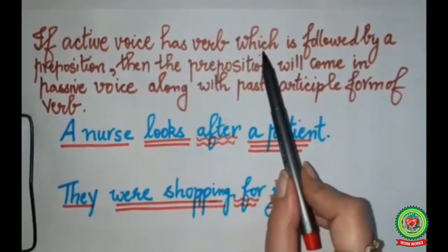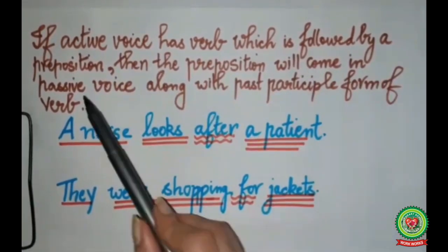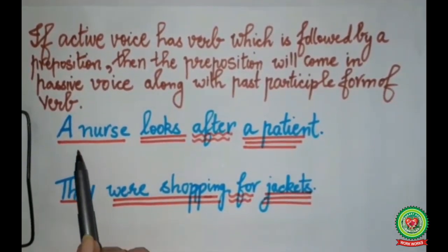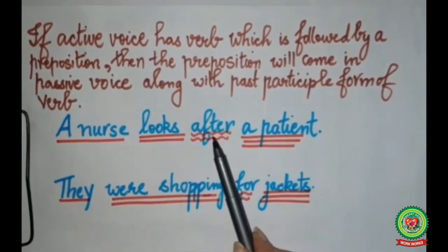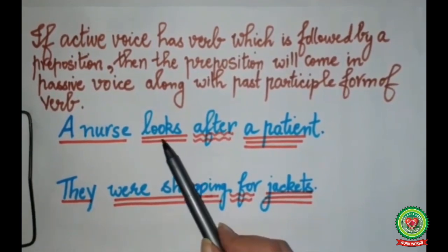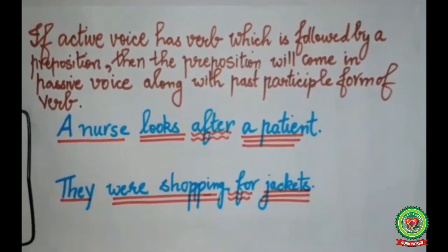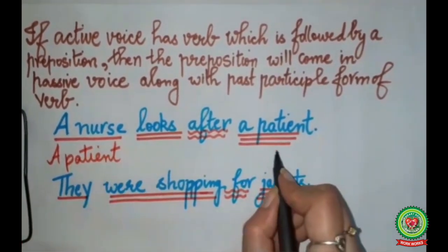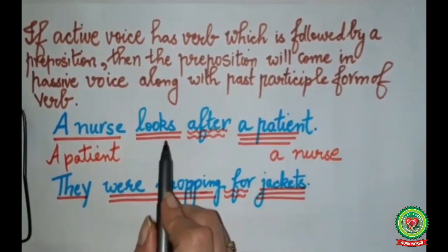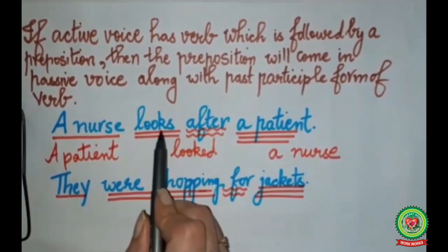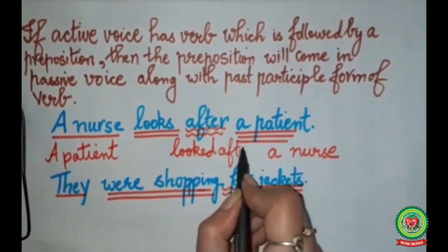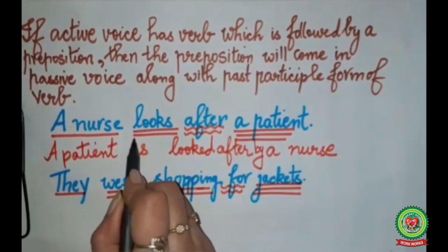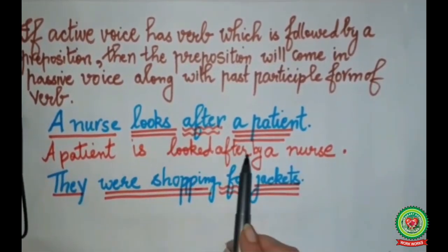The next rule: if the active voice has a verb followed by a preposition, then the preposition will come in the passive voice along with the past participle form of the verb. First example: A nurse looks after a patient. Here after is a preposition and it will come in the passive voice also after your verb. A patient will come in the beginning, a nurse will go to last. Looks changes to looked, and we write the preposition after. Looks is present form, so with patient we use is. The sentence becomes: A patient is looked after by a nurse.